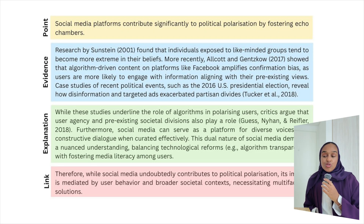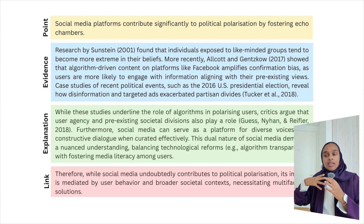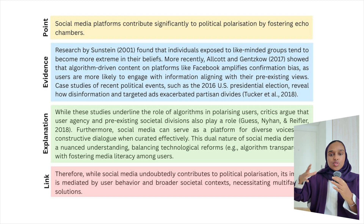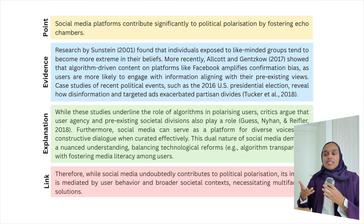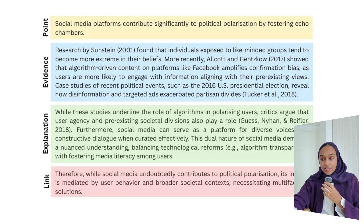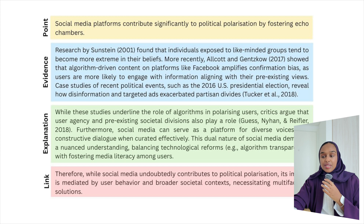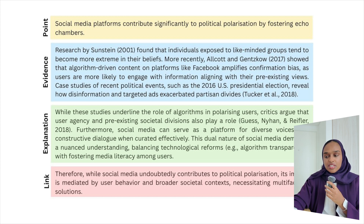Now let's look at another example — this one about social media platforms. The point is: 'Social media platforms contribute significantly to political polarization by fostering echo chambers.' That's really interesting — social media pulls people toward different political directions because you're only hearing and seeing one type of content due to your algorithm. Good point — where's the evidence? In 2001 it was shown that like-minded groups tend to become more extreme in their beliefs online, and more recently there are further studies with a case study example. The explanation is that this is happening because of pre-existing societal divisions and not enough diverse voices.